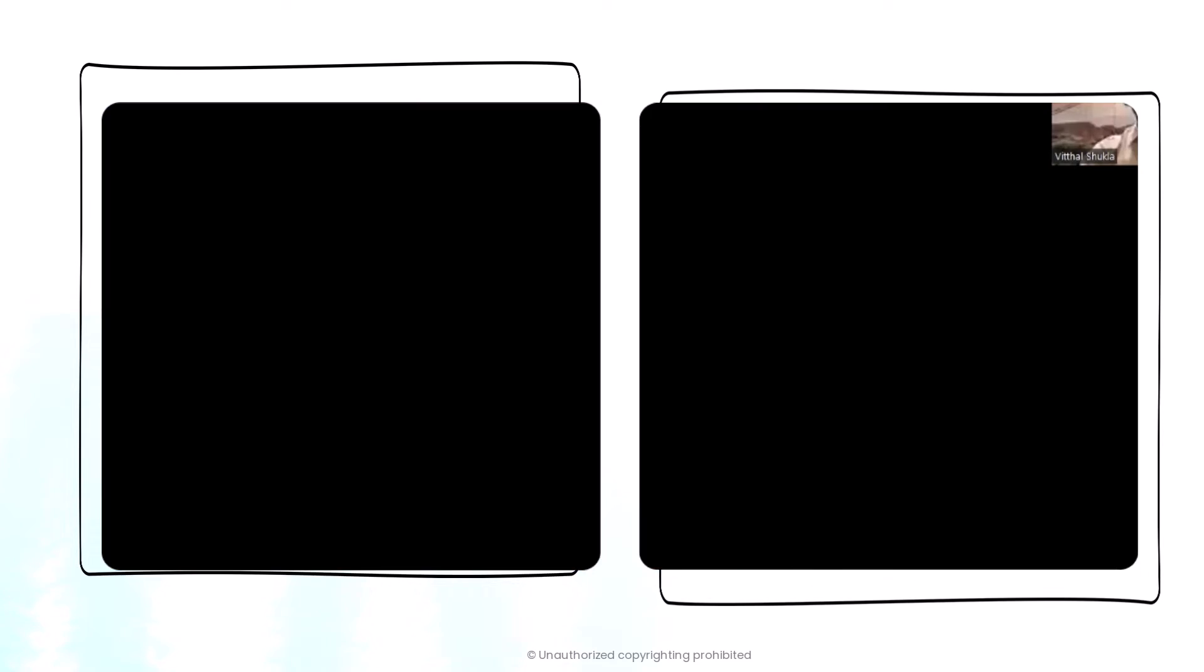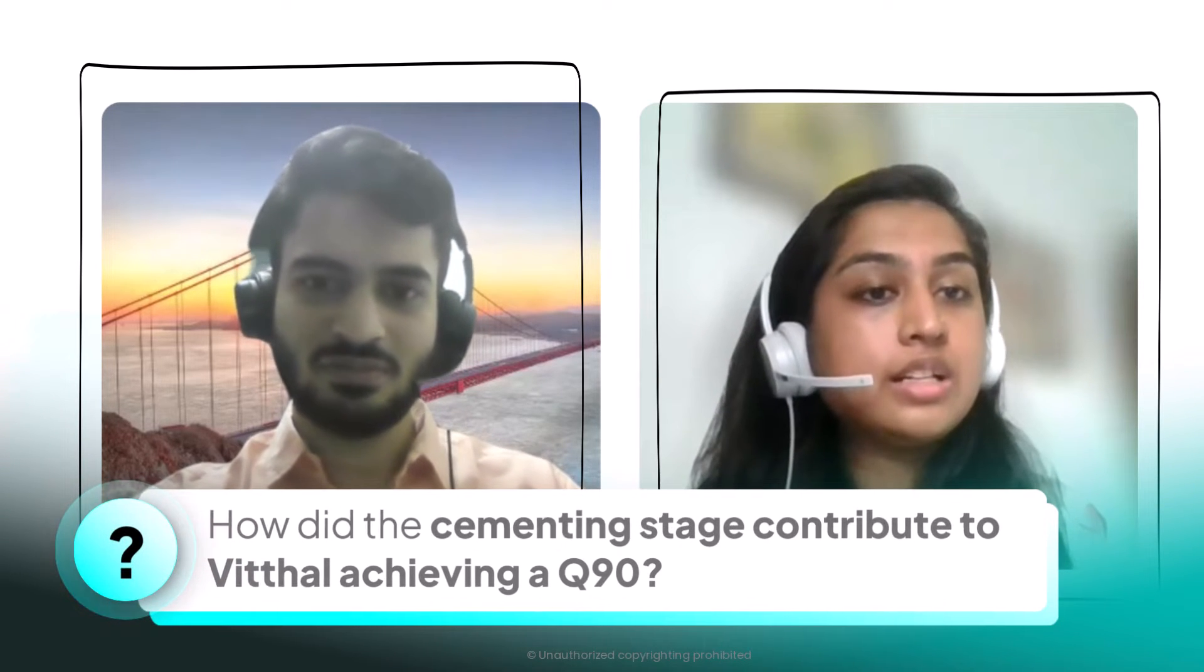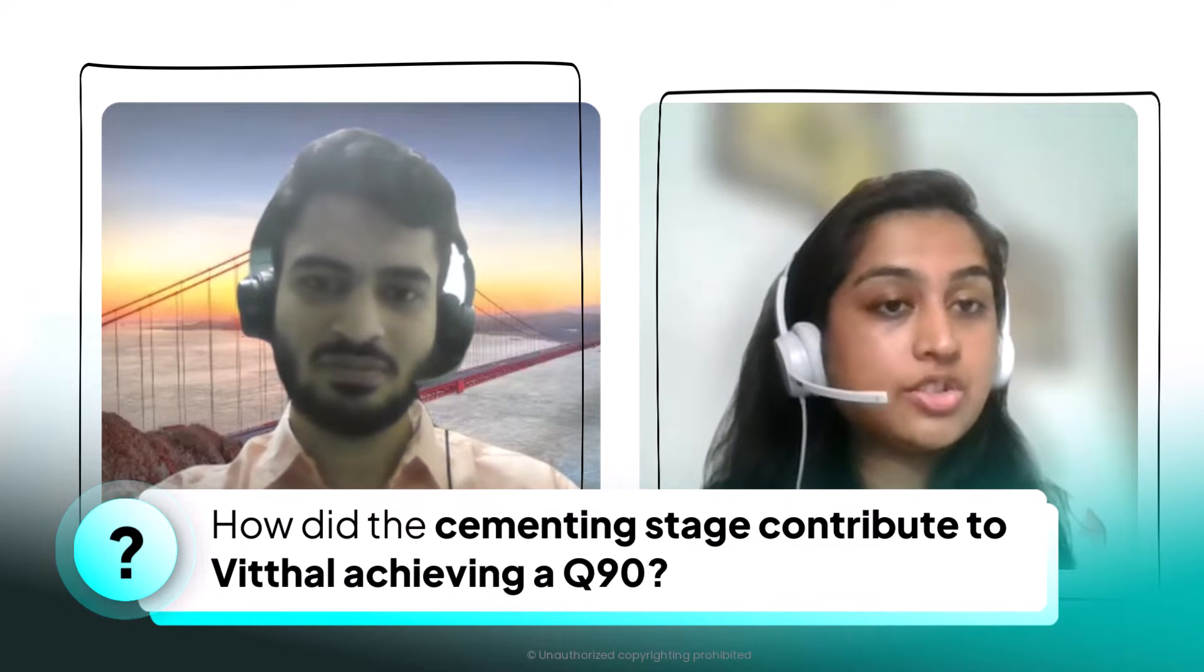So moving forward to your quant section, you went very extensively using the Scholaranium part of the course. And you've used a good set of questions. If I have to really show it to everyone out here, we can clearly see that you've used a good 68 percent of the questions from the Scholaranium bank. And you did a fair share of cementing stage also, that's the stage two. So what value did a cementing stage add to your preparation?